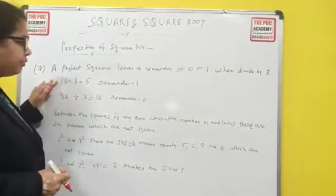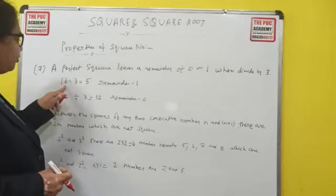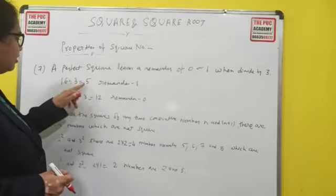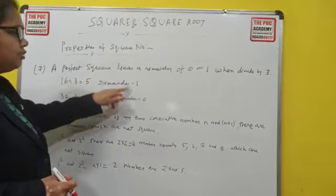When we divide 16 by 3, it's 3 times 5 equals 15. So 5 is the quotient and remainder is 1.